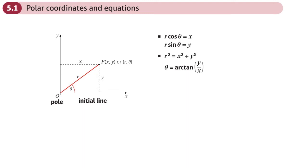This is the first section of chapter 5 on polar coordinates, all about polar coordinates and equations. You've come across coordinates before, where we have x and y, and we describe a point on a 2D plane using x and y. This is what we call the Cartesian plane.